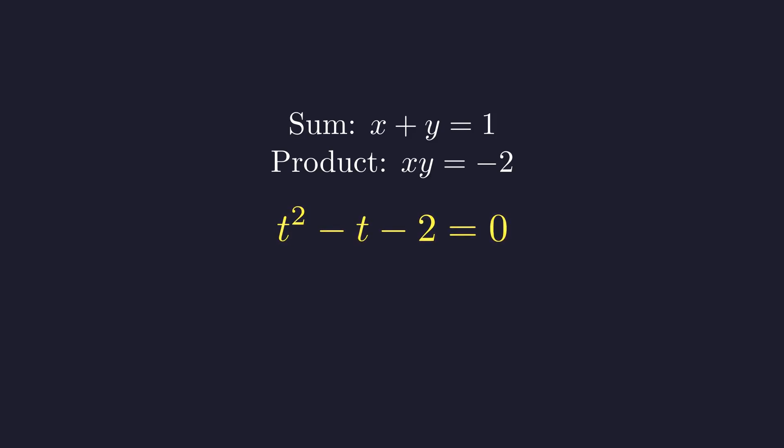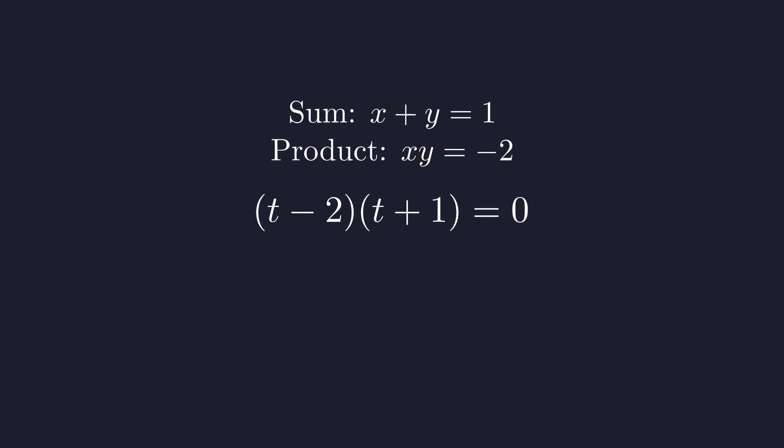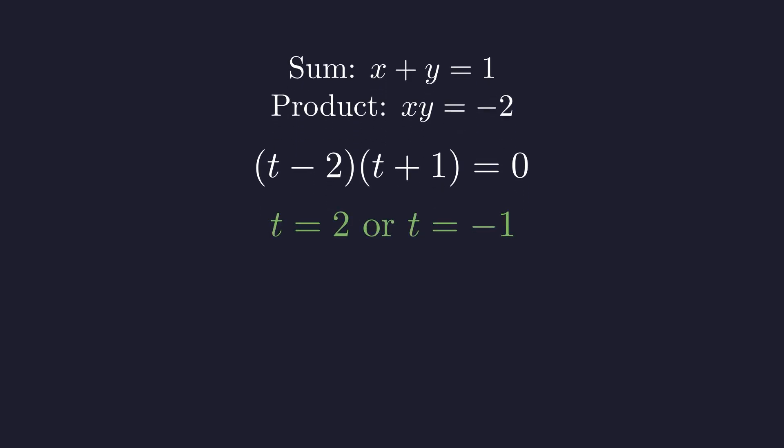This factors nicely. We're looking for two numbers that multiply to give negative 2 and add to give positive 1. Those numbers are 2 and negative 1, giving us t minus 2 times t plus 1 equals 0. So our roots are t equals 2 and t equals negative 1. This means x and y are 2 and negative 1, in some order. Since these are real numbers, our answer is definitely valid.